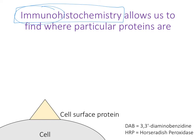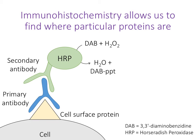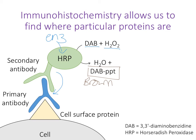The way this technique works: if we have a cell with a cell surface protein characteristic of a particular cell type, we use a primary antibody that sticks to that cell surface protein with really specific recognition. We then use a secondary antibody that sticks to the first antibody. That secondary antibody has an enzyme attached to it called horseradish peroxidase, or HRP. Peroxidases react with hydrogen peroxide, and with a synthetic substrate called DAB — in the presence of HRP and hydrogen peroxide, DAB reacts to give water and a brown, insoluble DAB precipitate.